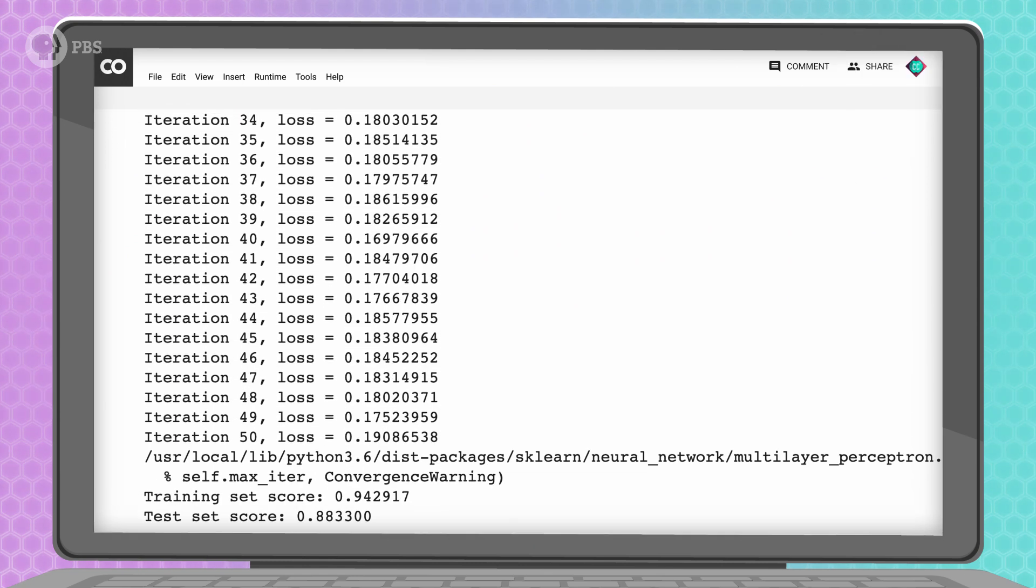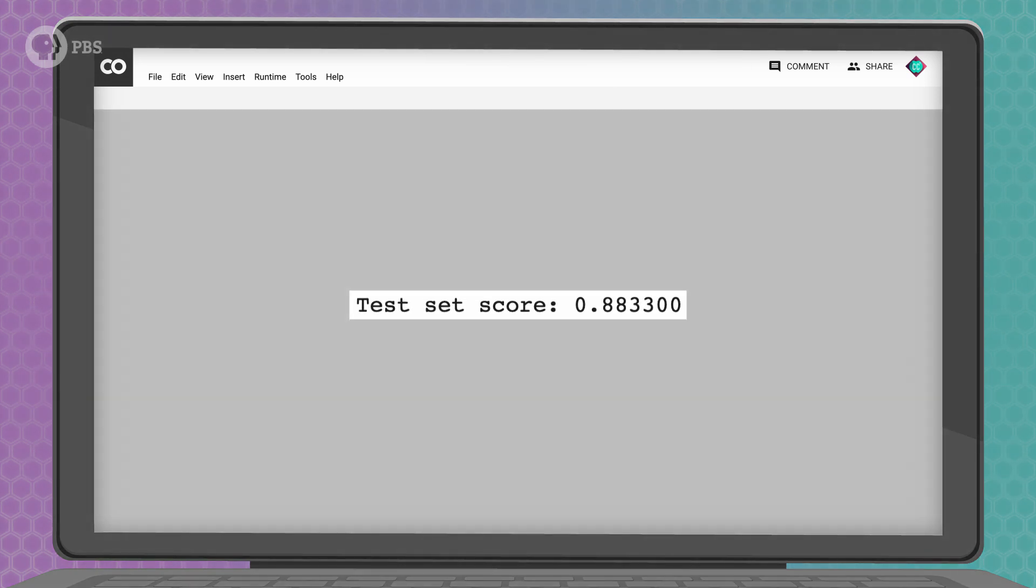Now we've got better accuracy rates on our testing dataset. We got 88% correct instead of 84%, and that's an improvement. Over time, we can develop an intuition about how to structure neural networks to achieve better results. See if you can create a network that has a higher accuracy than ours on the testing dataset. But, for now, we're going to move forward with this trained network.